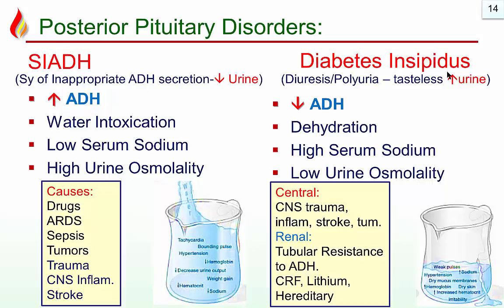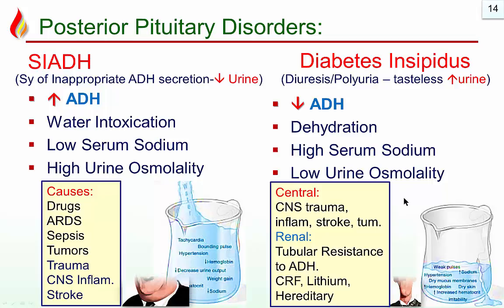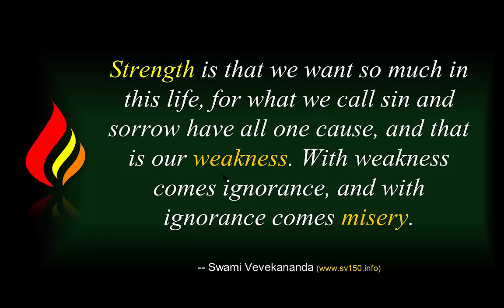Diabetes insipidus — by name, 'insipidus' means tasteless urine, unlike diabetes mellitus which is sweet or honey urine. In diabetes insipidus there is polyuria due to decreased anti-diuretic hormone, so there is excessive filtration, polyuria, dehydration, the body loses water, high serum sodium, and low urine sodium — more urine is lost from the body. A useful mnemonic: think of Laurel and Hardy — Laurel, the thin person, represents diabetes insipidus, and Hardy represents SIADH. Thank you.